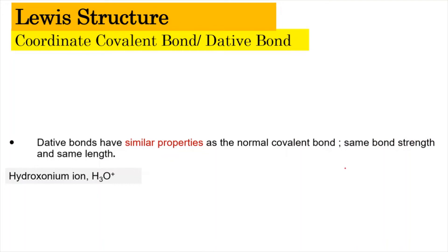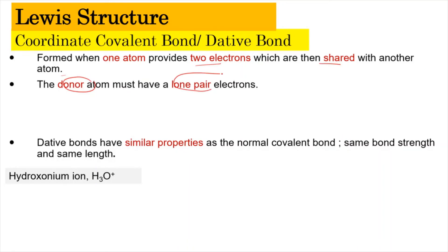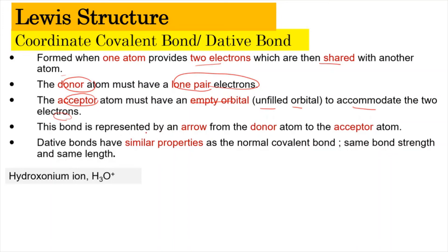Now we look at the last type of bond: the coordinate covalent bond, also known as the dative bond. A coordinate covalent bond is formed when one atom provides two electrons which are then shared with another atom. This happens when the donor atom has a lone pair of electrons and the acceptor atom has an empty or unfilled orbital to accommodate those two electrons. This bond is represented by an arrow from the donor atom to the acceptor. The dative bond has similar properties to a normal covalent bond in terms of bond strength and bond length.